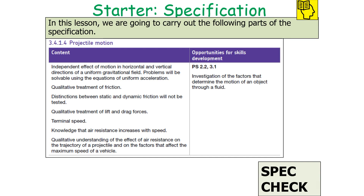In this lesson we're going to be looking at the following part of the AQA A-level physics specification: 3.4.1.4 — projectile motion.